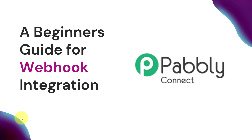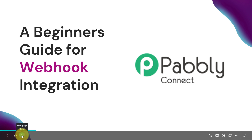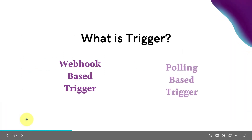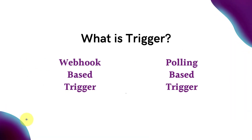Before moving forward towards understanding the webhook, first of all we will understand what is a trigger in our workflow. As we know, trigger and actions are the two main principles on which the entire automation runs. The trigger is the very first step of every workflow, which starts and initiates the entire workflow. Whatever we select in our trigger is going to command the entire workflow, and the actions are going to follow that same command.